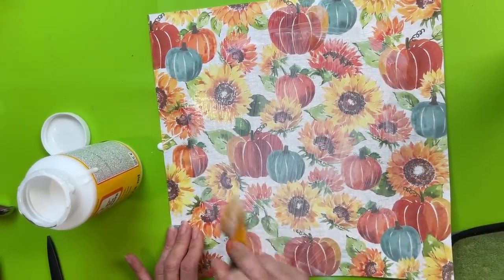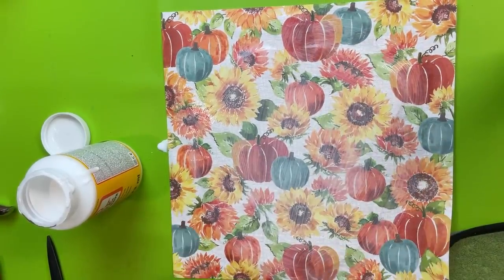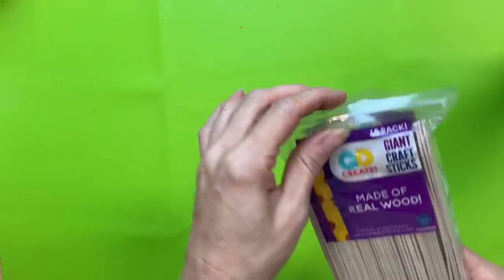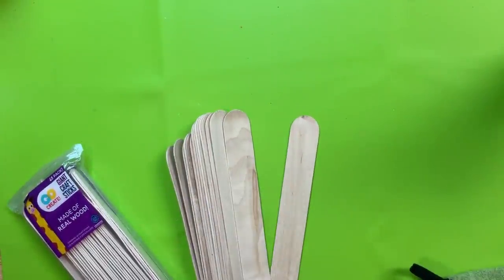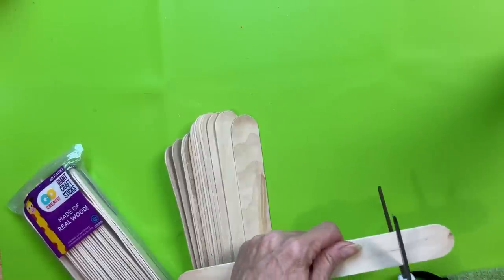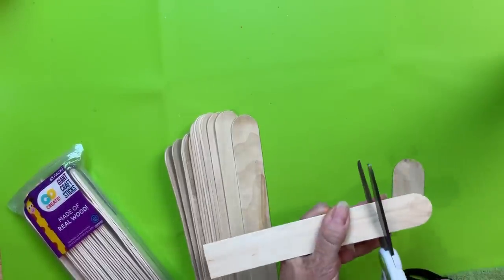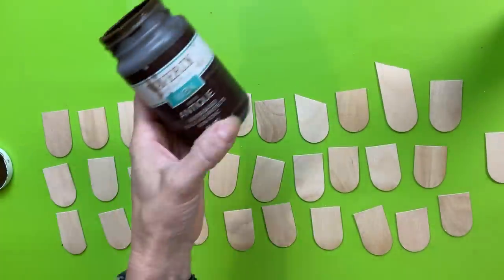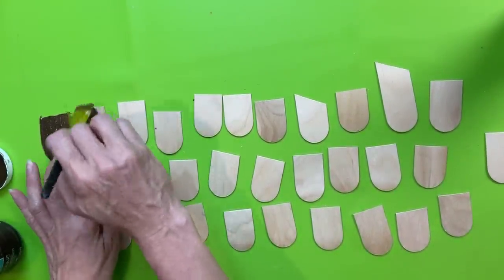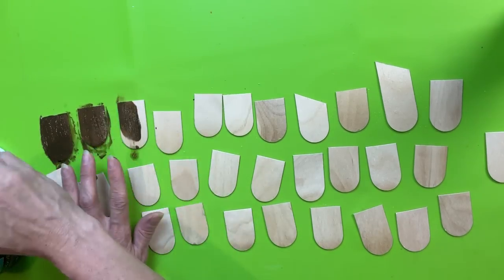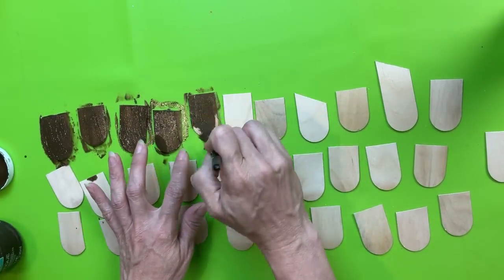Now, for the top part of the acorn, we're going to use some of these giant craft sticks. We're just going to use the rounded ends, and I did save the middle part of the sticks for another project, but I'm going to cut, I can't remember how many I did, maybe 15 to 20 of these sticks, and I cut both of the round ends off. Then we're going to use our antique wax. We're going to brush it on and then wipe off the excess to get a nice dark stained wood color to these little rounded ends of the craft sticks.